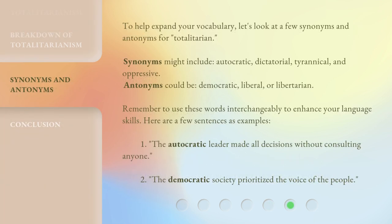To help expand your vocabulary, let's look at a few synonyms and antonyms for totalitarian. Synonyms might include autocratic, dictatorial, tyrannical, and oppressive. Antonyms could be democratic, liberal, or libertarian. Remember to use these words interchangeably to enhance your language skills. Here are a few sentences as examples: 1. The autocratic leader made all decisions without consulting anyone. 2. The democratic society prioritized the voice of the people.